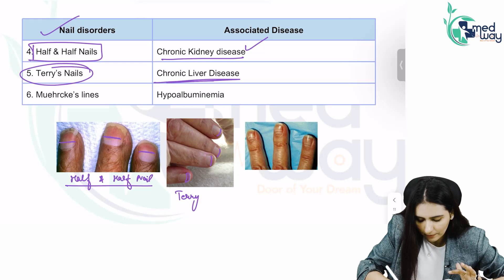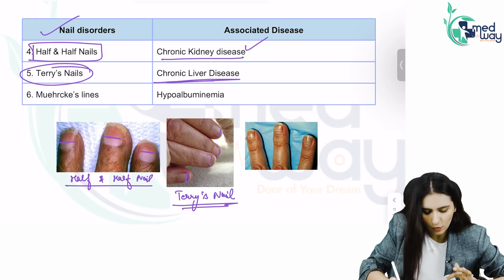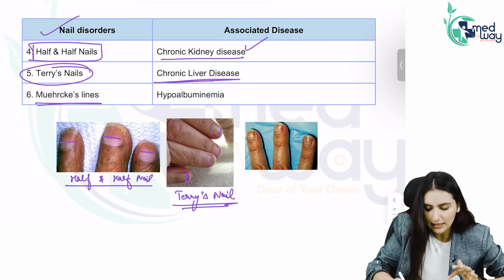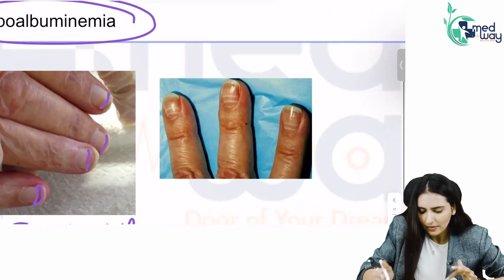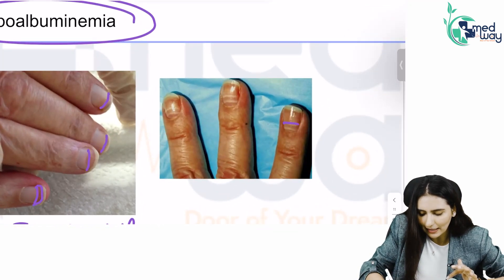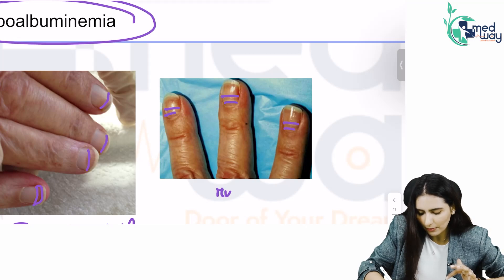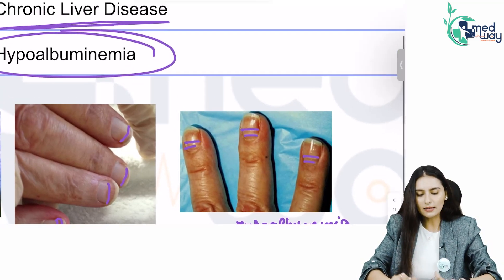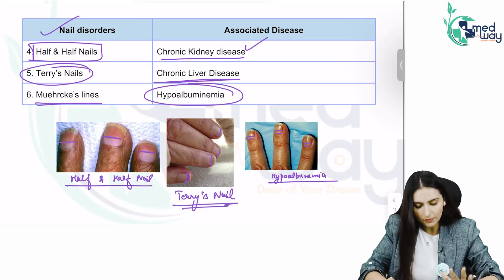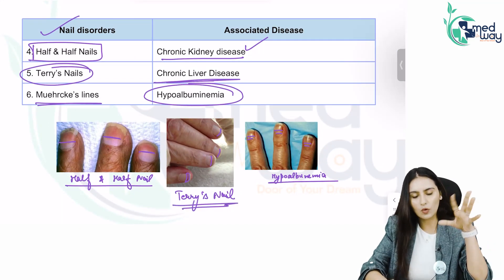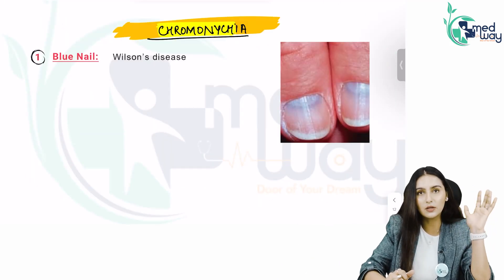Those are Terry's nails. Then you have Muehrcke's lines, which are seen in hypoalbuminemia — these are simple white lines seen in protein deficiency or hypoalbuminemia. These are the nail disorders and the diseases that they are associated with.